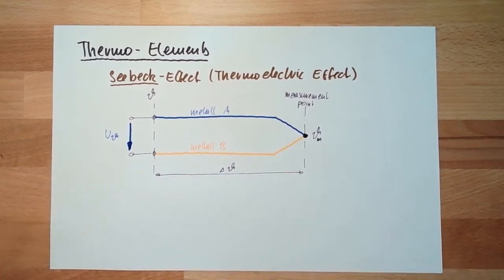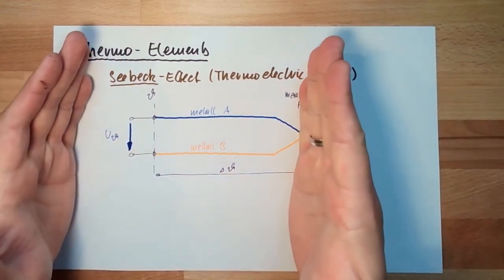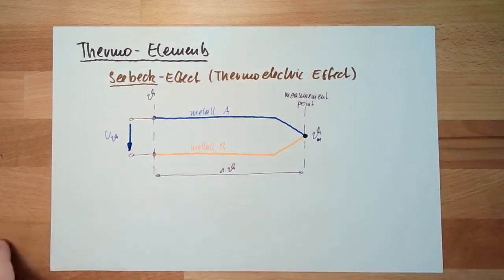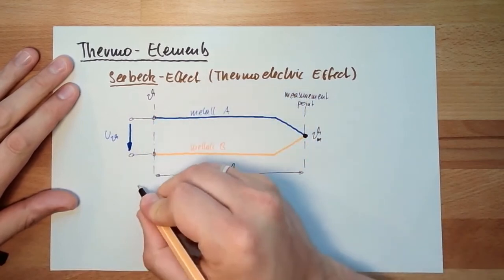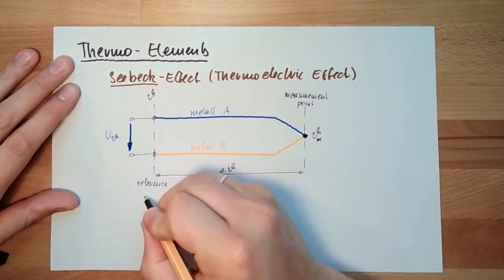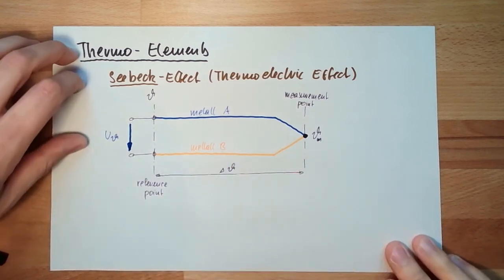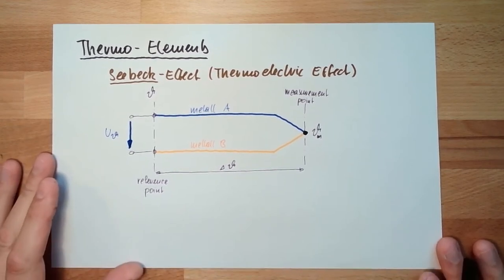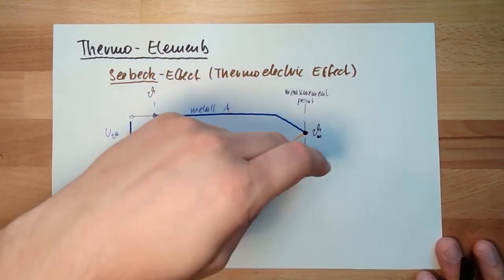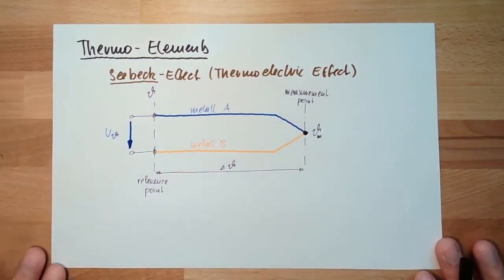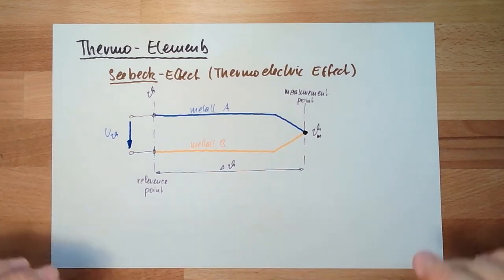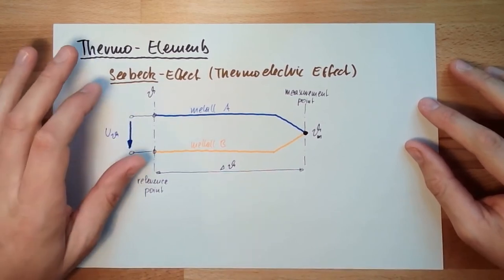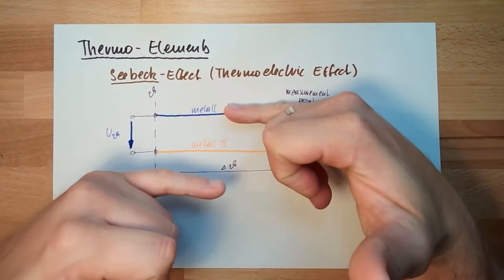It's not that easy, because it's not really reflecting the temperature. It's actually reflecting the temperature difference between the measurement point and the reference point. Here I call reference point. The delta temperature is reflected by this thermal voltage. This is the use of the Seebeck effect. I can only measure temperature differences between two points, and how big this difference is depends on the combination of metals I'm using.